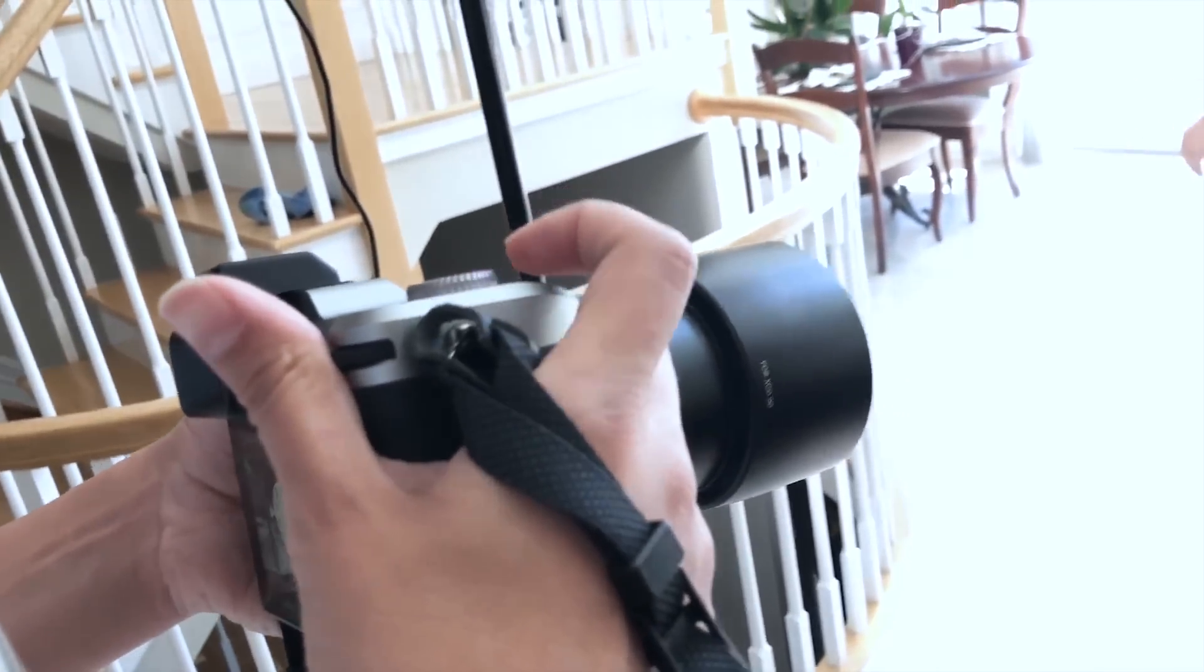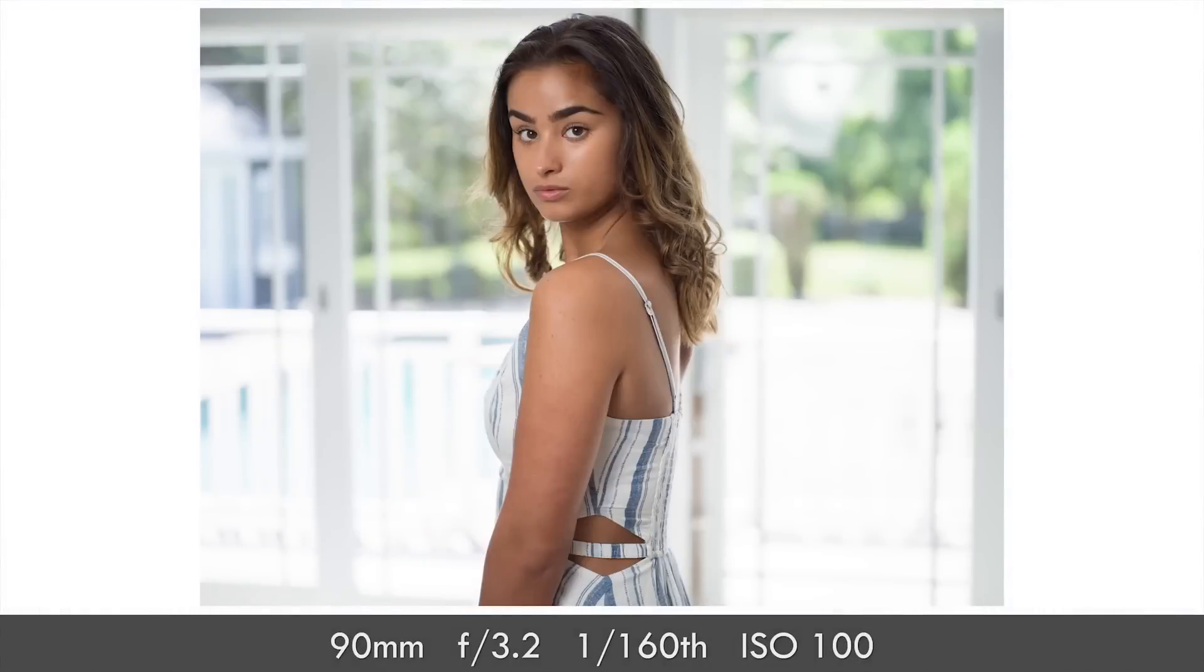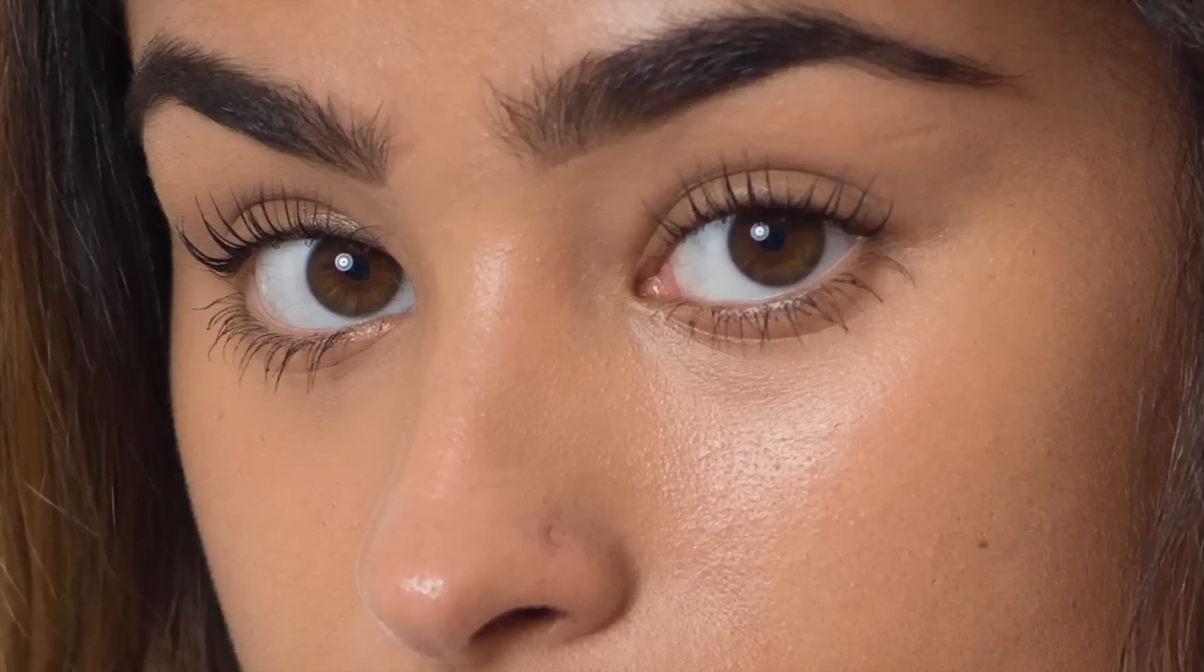But still, this has a 3.6 inch high megapixel, I think 2.36 million dot display. So it's going to be sharper and bigger and actually brighter in my experience than other cameras that you're accustomed to, even high-end cameras like the A1. And that overall really contributes to a superior experience with the X2D.